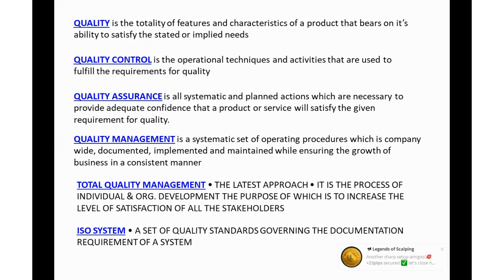Quality assurance is the third step, which discusses the satisfaction of the community using the product. Then there is quality management — what procedures you will manage to maintain quality. After that comes total quality management — are you able to follow the total quality within the product that you want to meet? Finally, the ISO system is the standard documentation system which governs that the product is being made with the help of quality procedures.